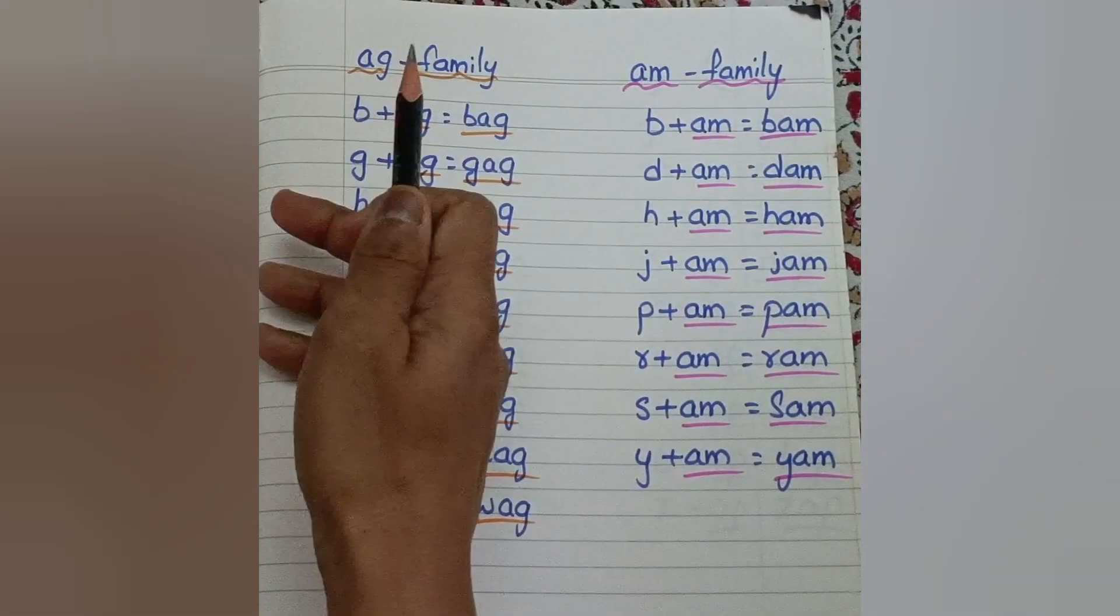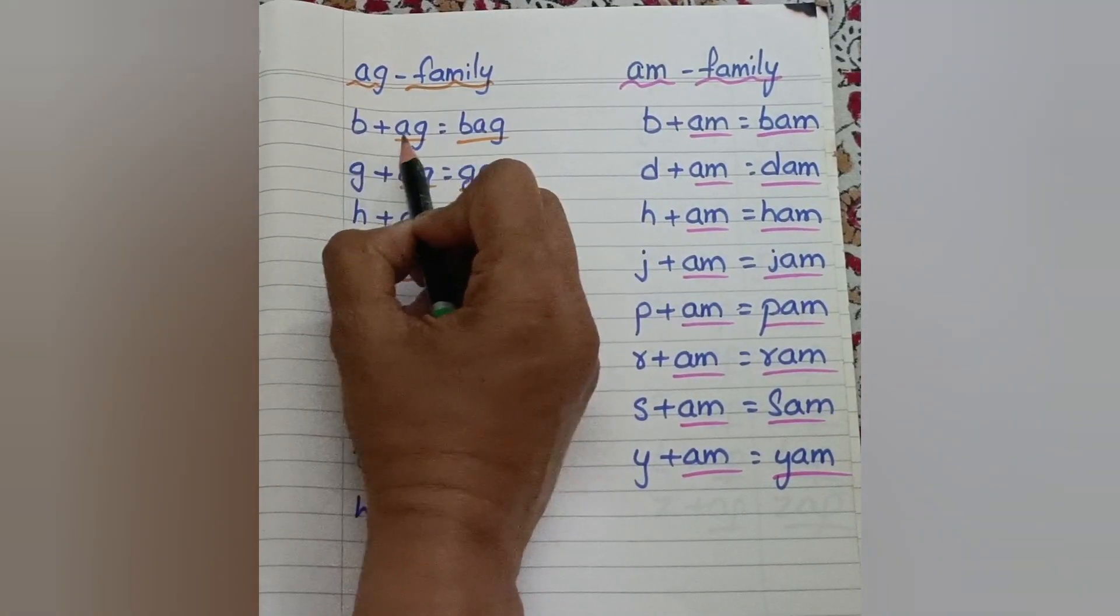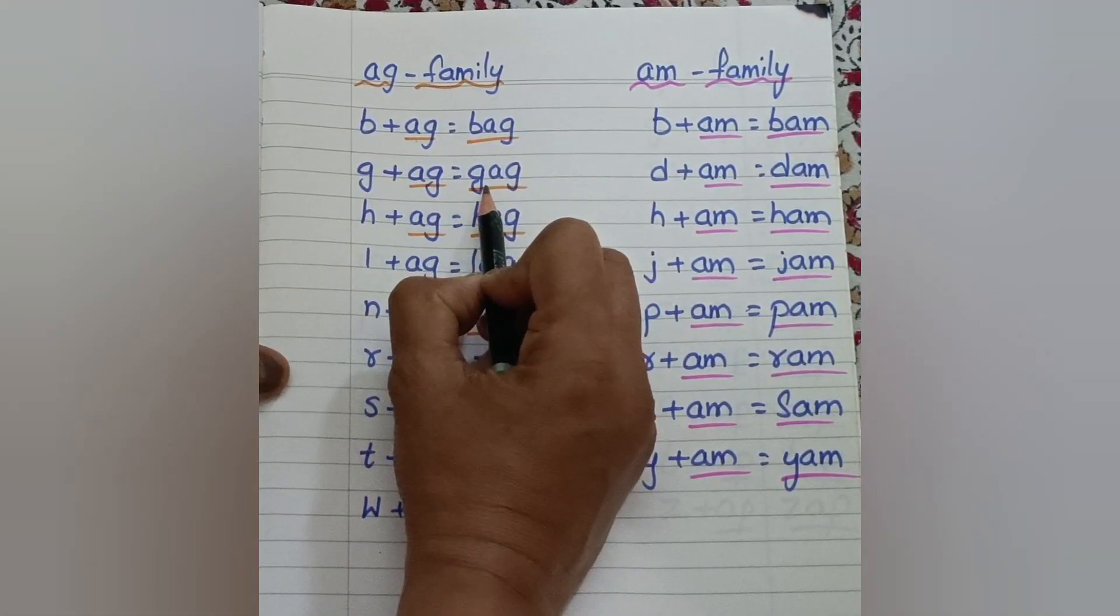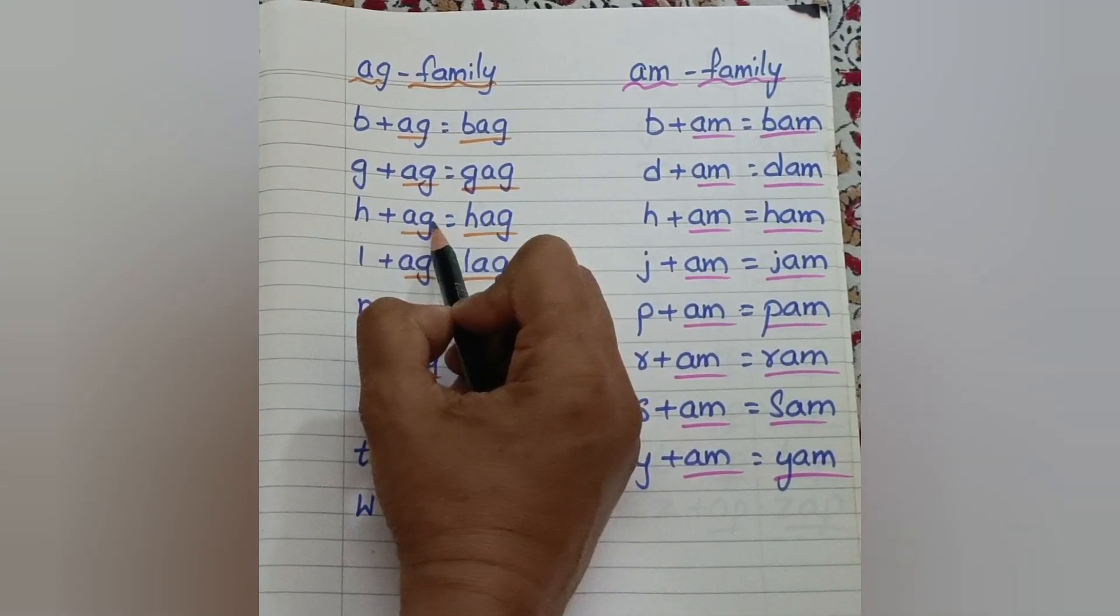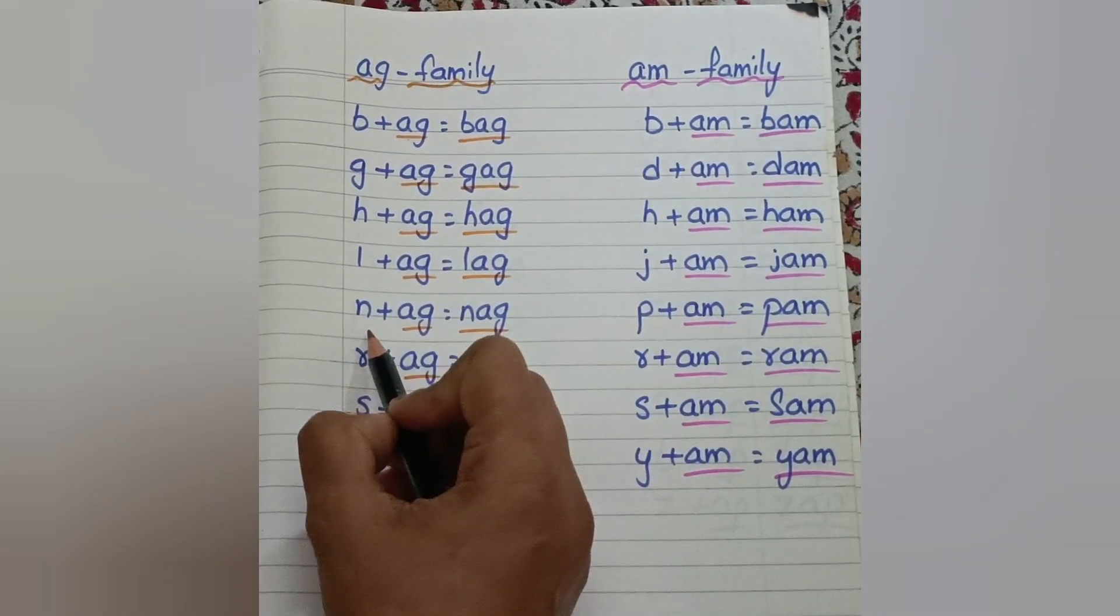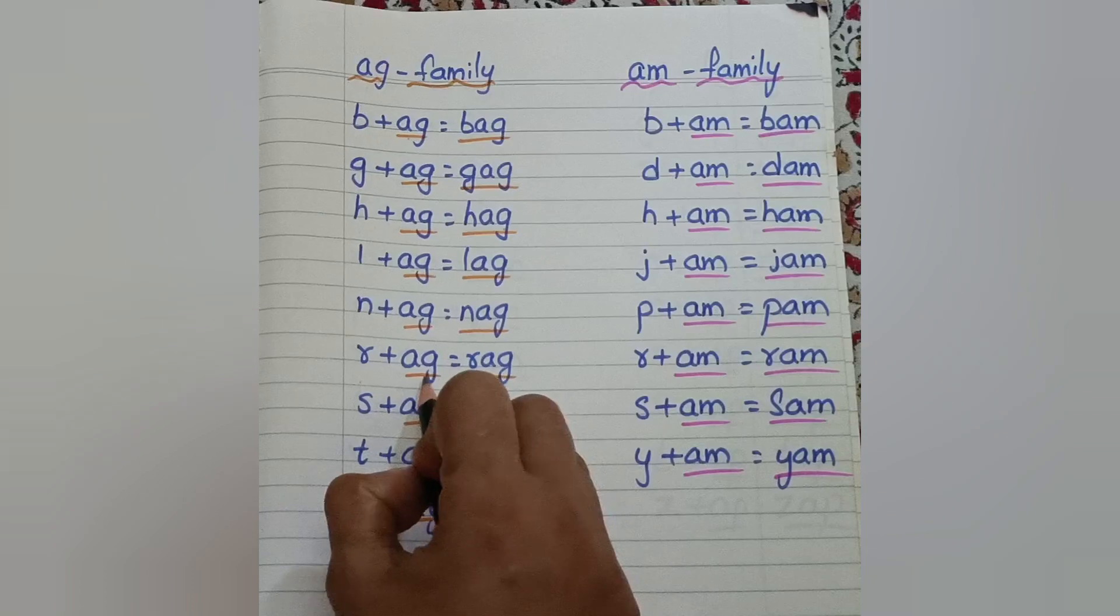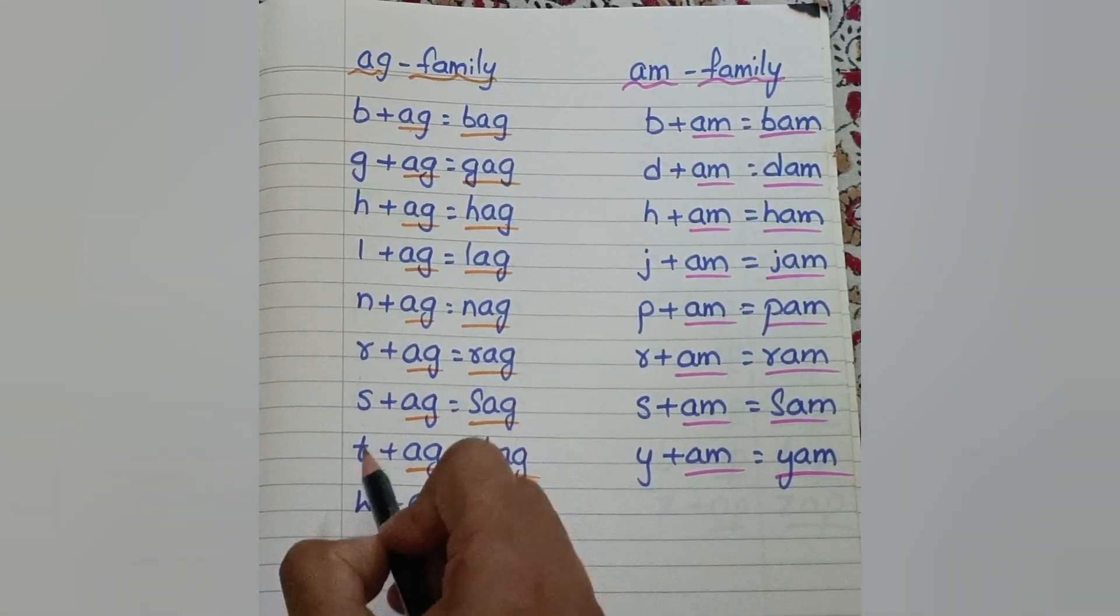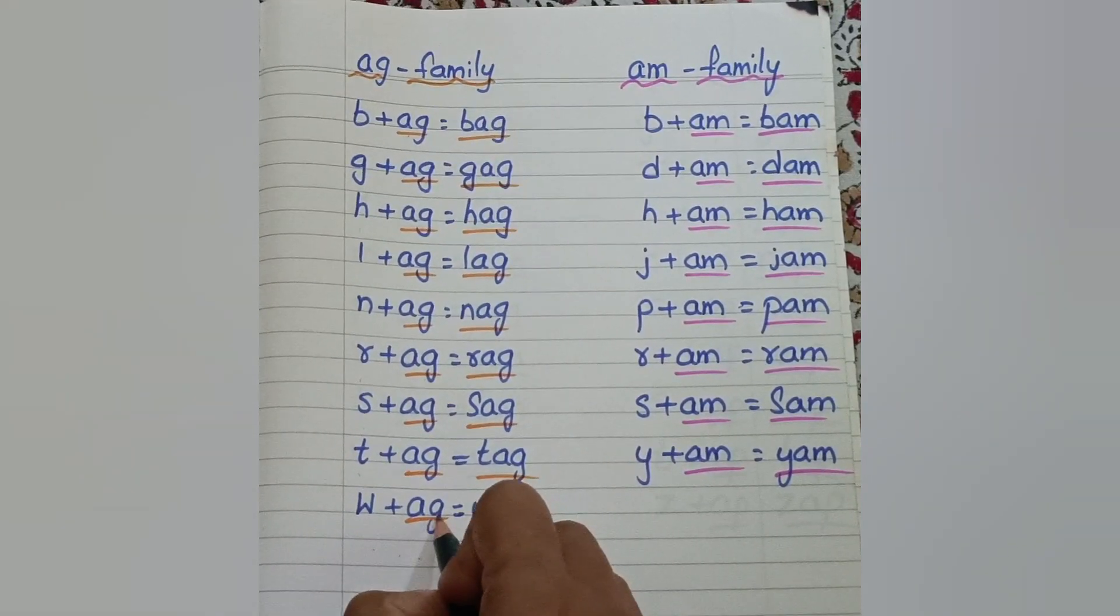Then next we have Ag family. Ag. B, Ag: Bag. G, Ag: Gag. L, Ag: Lag. H, Ag: Hag. N, Ag: Nag. R, Ag: Rag. S, Ag: Sag. T, Ag: Tag. W, Ag: Wag.